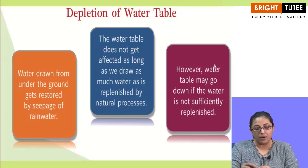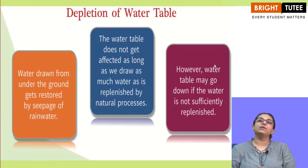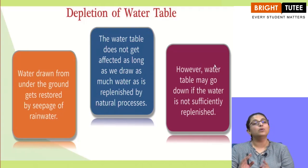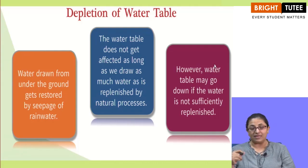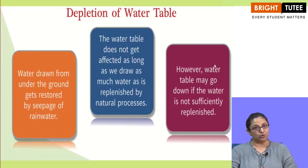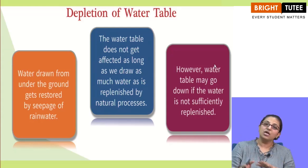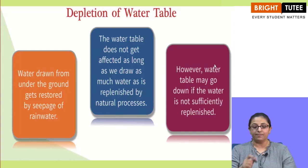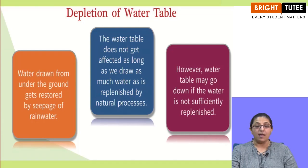Now we will talk about depletion of water table. Depletion means decrease of the water table. Water drawn from under the ground gets restored by seepage of rainwater. When rain happens, that rainwater seeps through the ground and the water which is drawn out is restored. The water table does not get affected as long as we draw as much water as is replenished by natural processes.